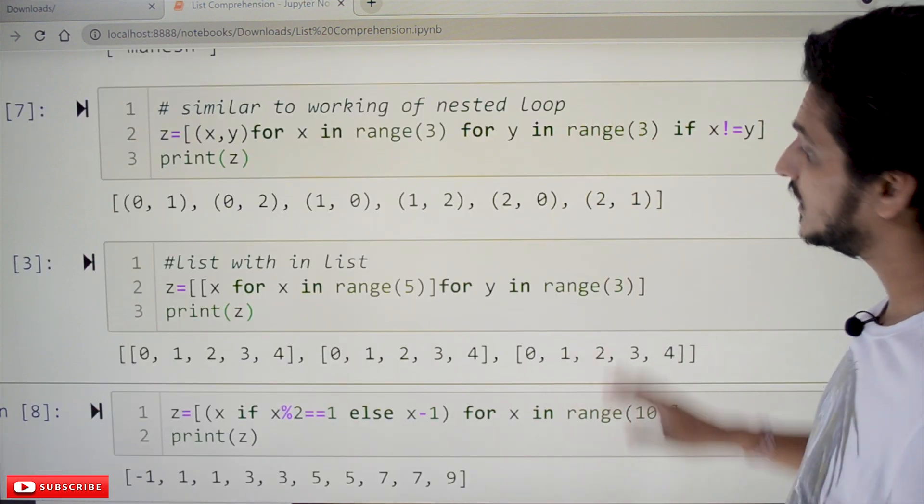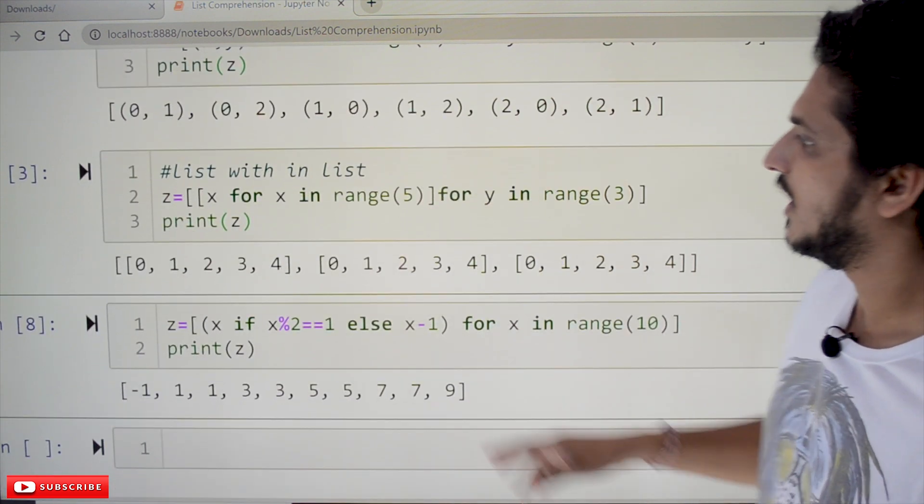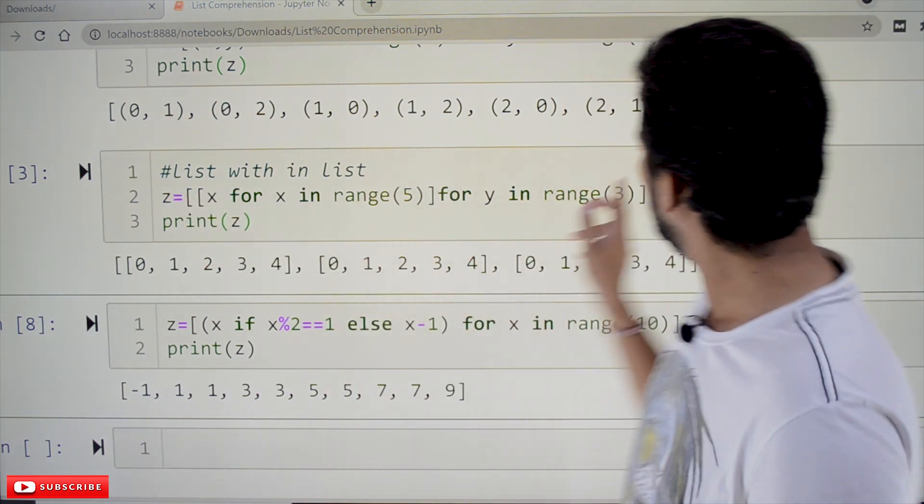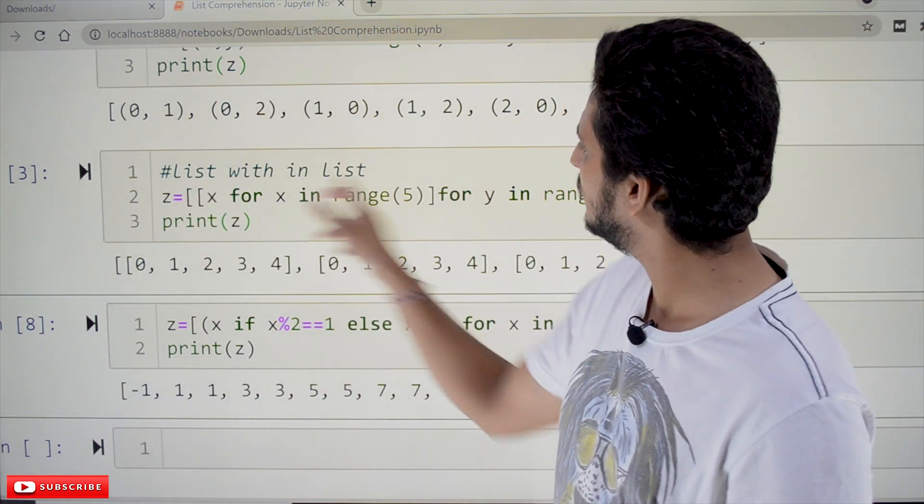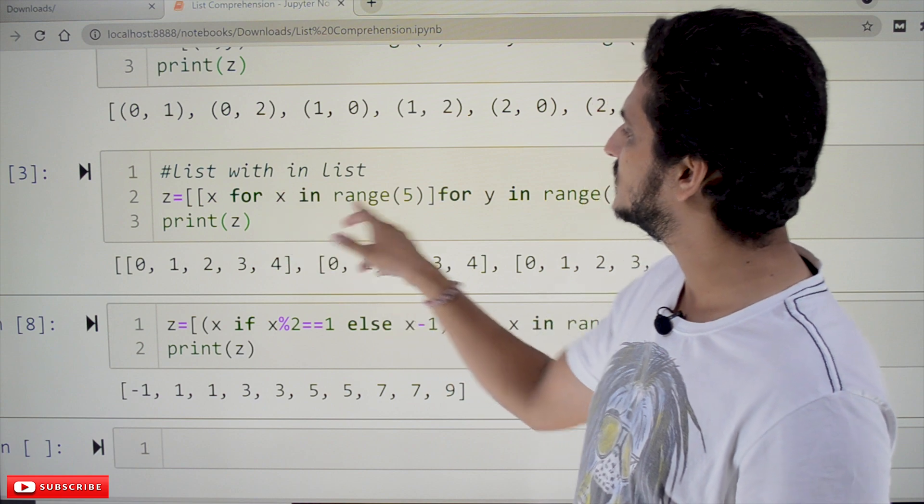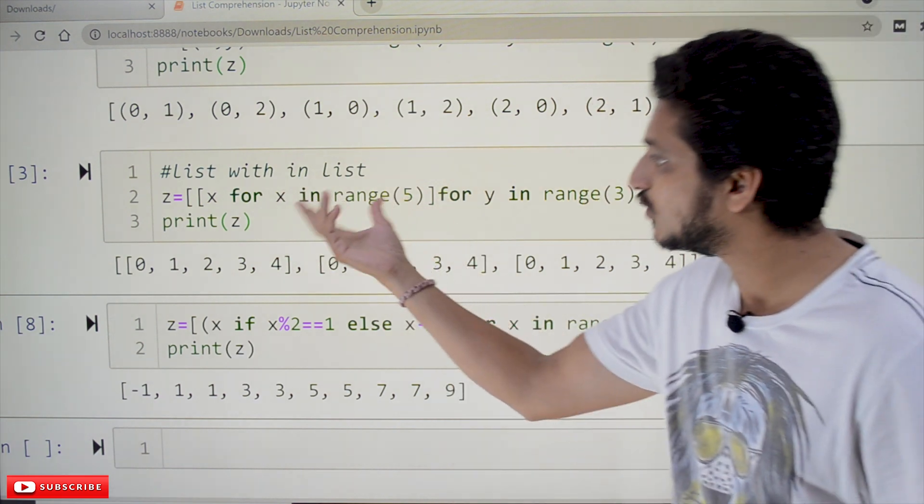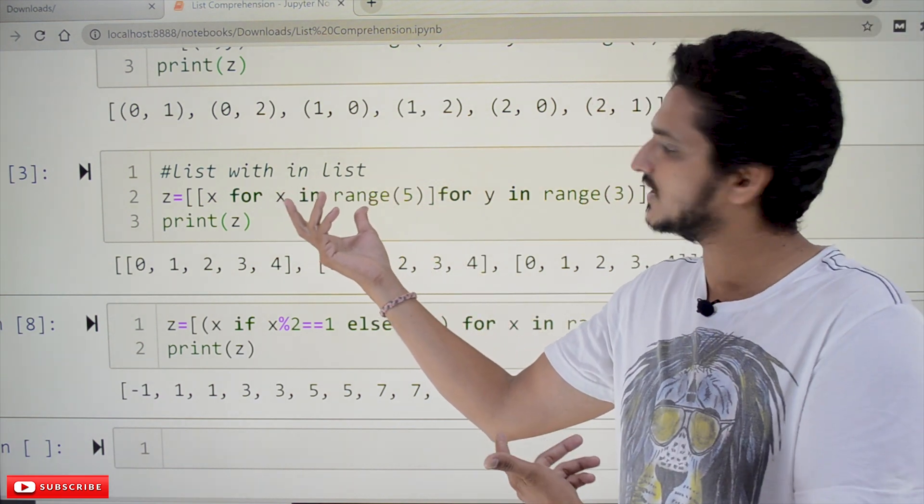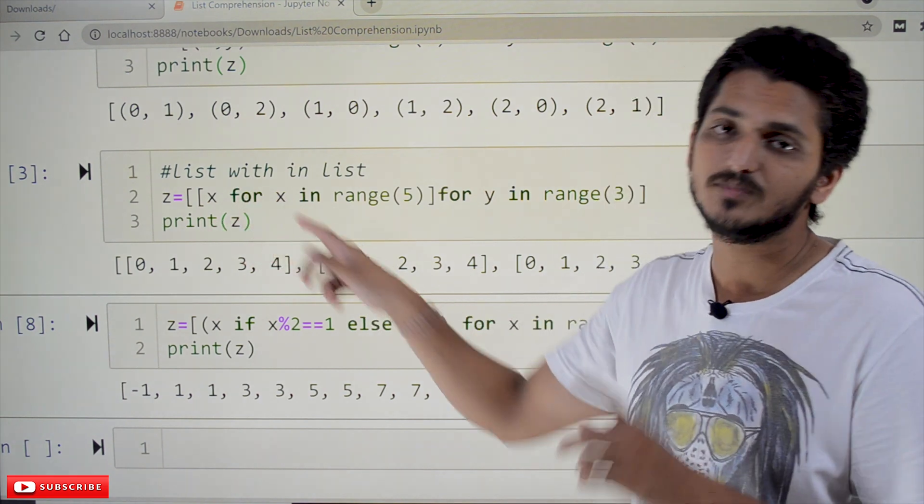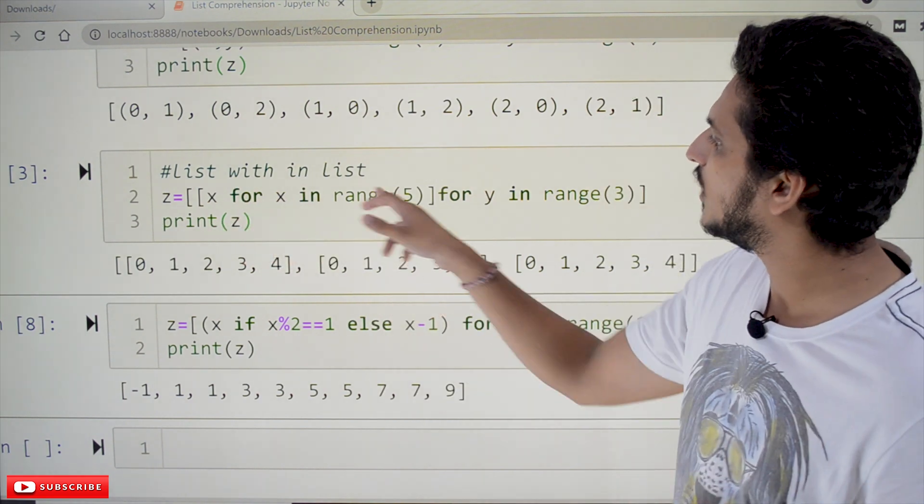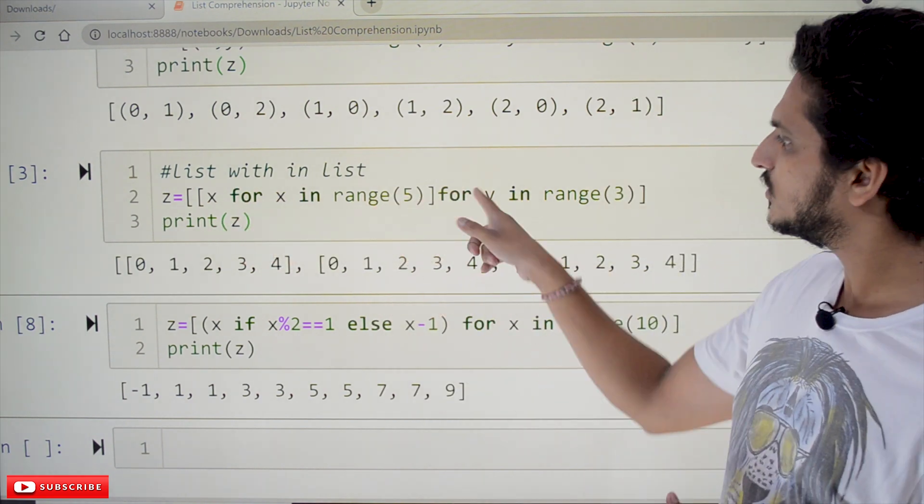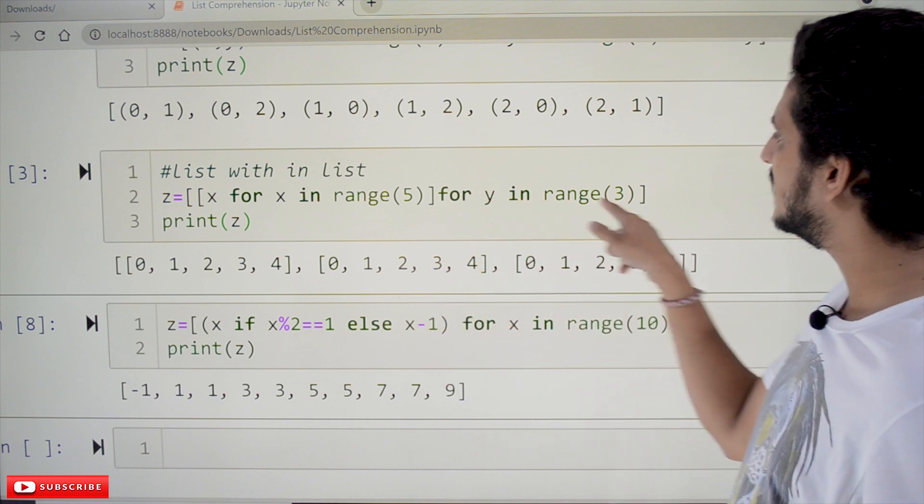And coming to the next. If you want to create a nested list, how we do that. So, in the list we have written that. Again one more list: [x for x in range(5)]. What's this statement? This is list comprehension. X will take values from 0 to 0, 1, 2, 3, and 4. Coming to the next, in this for y in range(3).